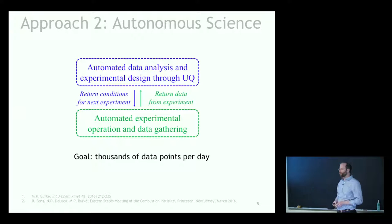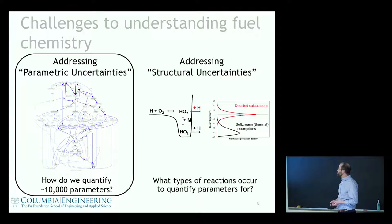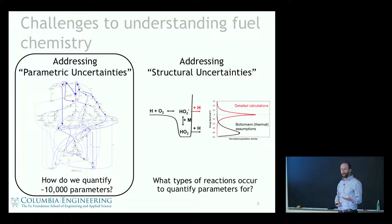Another challenge we face is: what if we don't have this diagram right in the first place? Is there a way we can identify potential structural uncertainties — uncertainties in what the reaction network actually looks like, what reactions we're missing, what species we're not thinking about? Those are some of the things we're interested in, and I'm curious to hear anyone's thoughts.